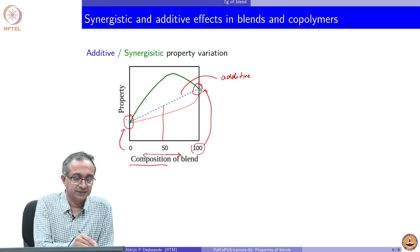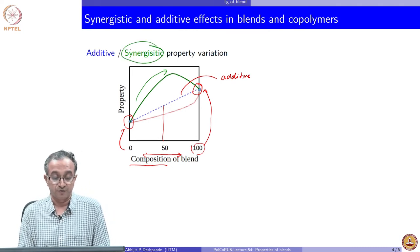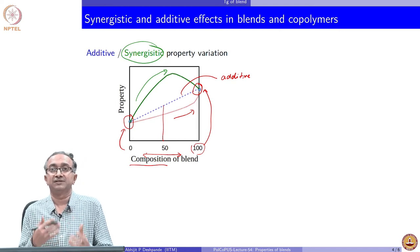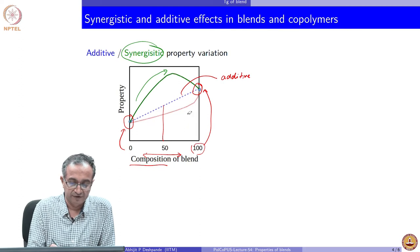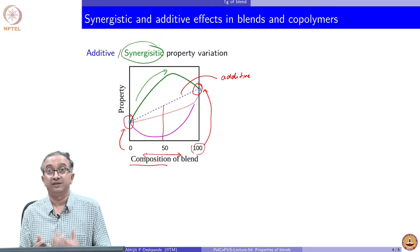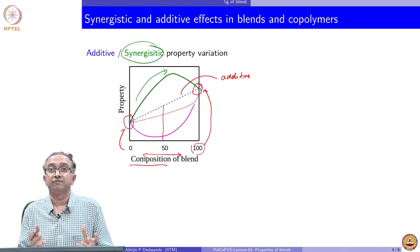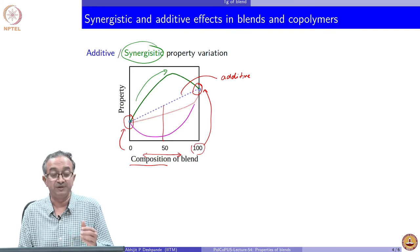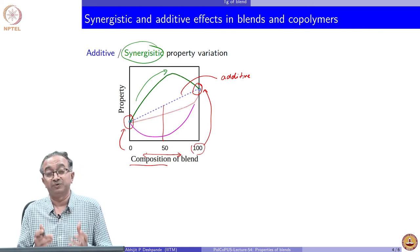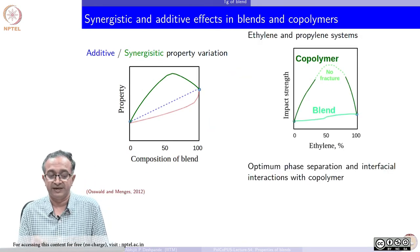However, what we could also observe is a trend in which we have a property which is much higher than the pure components. Then we call it a synergistic property variation. We could also have a variation which is much less than the two. You could have a very negative variation based on how the microstructure and other features of the overall blend systems are. Our interest more often than not will be to get synergistic properties, so that we get properties which are better than the two components we are adding. Quite often, we should at least get the additive properties, which again will be useful.